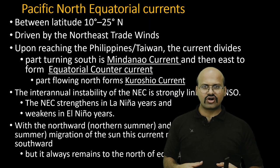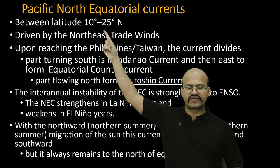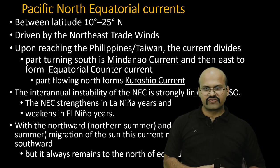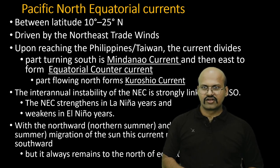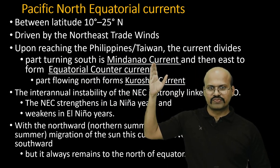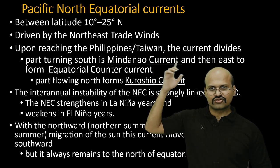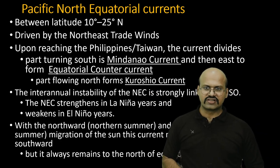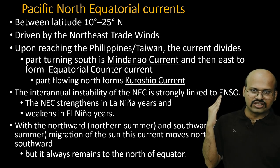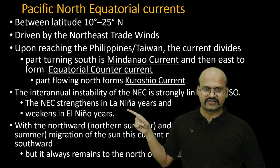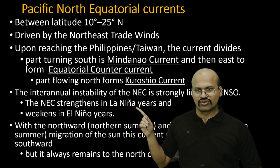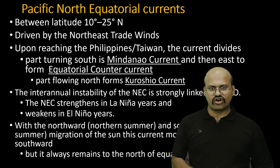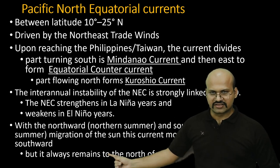The Pacific North Equatorial Current moves between 10° and 20°, a little north of the equator, driven by northeast trade winds. Upon reaching the Philippines or Taiwan, it divides: the Mindanao Current flows southward and forms the equatorial counter current, while the northward part is called the Kuroshio Current. There is inter-annual instability in the NEC because of El Niño — the current is very strong during La Niña but very weak during El Niño. The NEC also shifts north and south between summer and winter but always remains north of the equator.